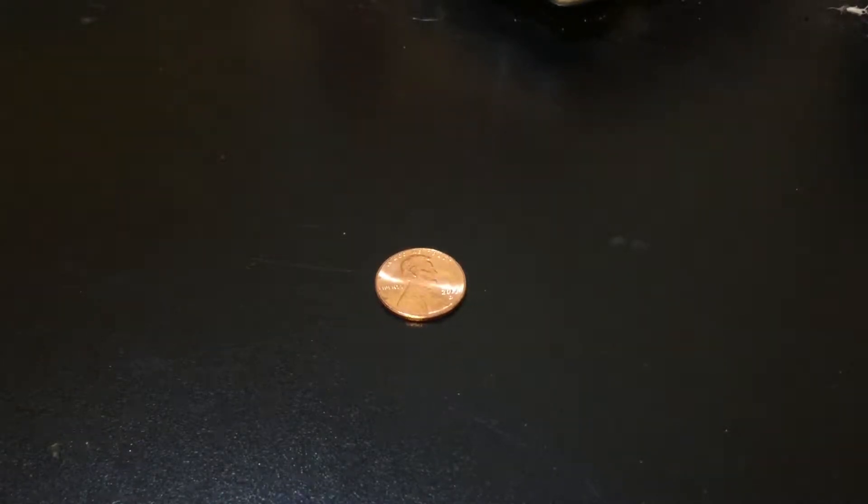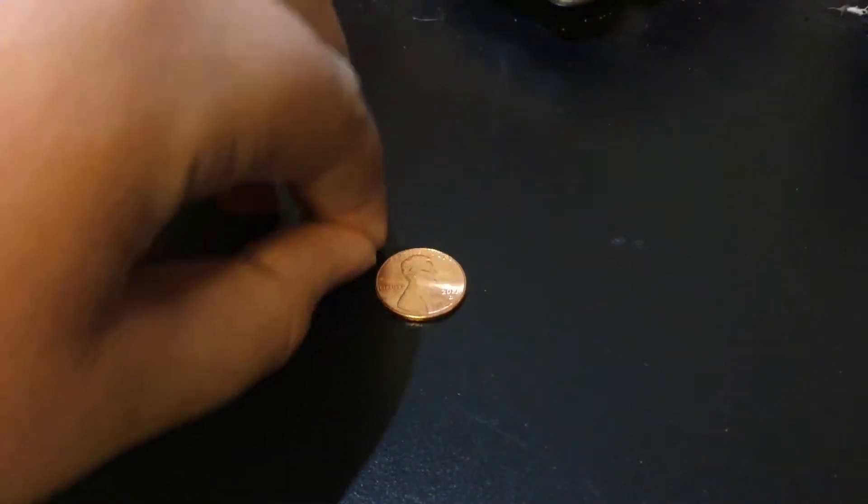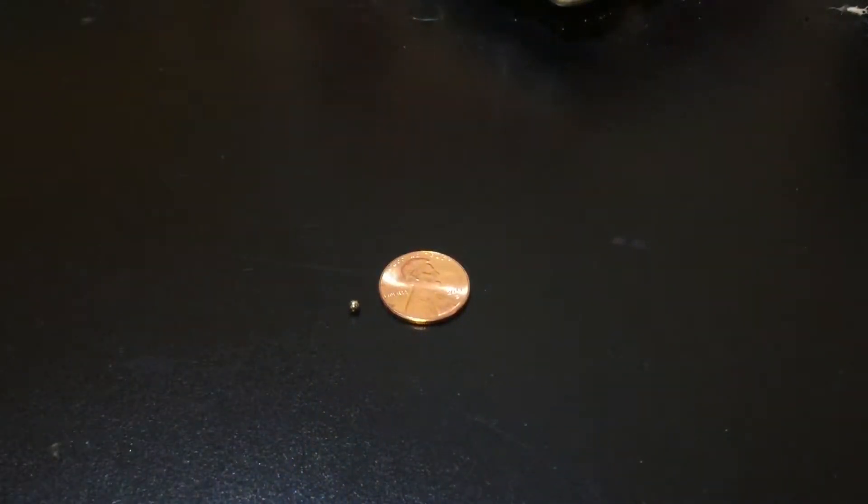A micromagnet is a 2.5 millimeter magnetic sphere. If you can see my US penny here, that right there is a micromagnet.